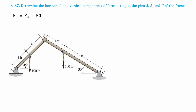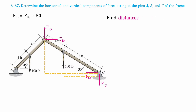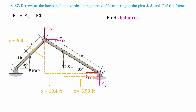Then we'll draw the free body diagram for member BC. At both B and C there is a pin, so they'll both have X and Y components. Next we'll find the base and height of the triangle formed by member BC, as well as the distance from the 100 pound force to point C. The base of the triangle results in 10.4 feet. The horizontal distance from point C to the 100 pound force is found similarly, where the hypotenuse is now 8 feet instead of 12, resulting in 6.93 feet. The height equals 6 feet.